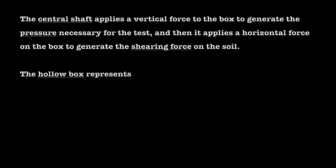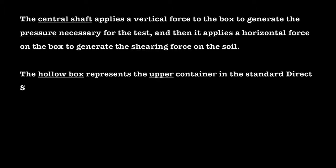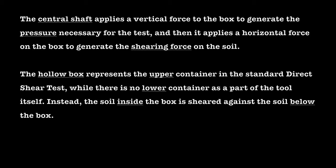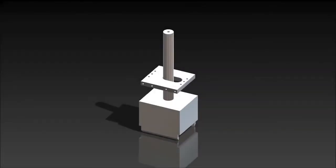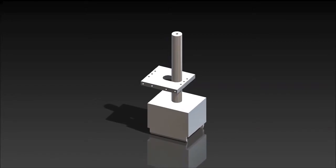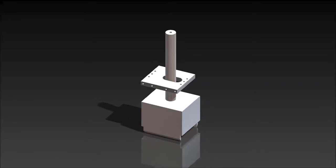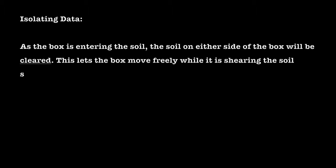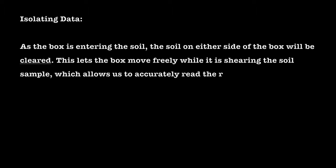The hollow box represents the upper container in the standard direct shear test, while there is no lower container as part of the tool itself. Instead, the soil inside the box is sheared against the soil below the box. As the box is entering the soil, the soil on either side of the box will be cleared. This lets the box move freely while it is shearing the soil sample, which allows us to accurately read the resistance of the soil.